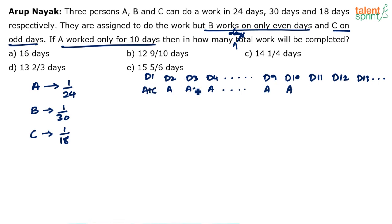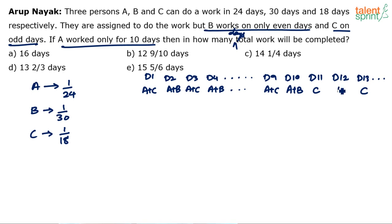So C works on the 1st, 3rd, 5th, 7th, 9th day — A and C work together on odd days. On even days — 2nd, 4th, 6th, 8th, 10th — A and B work together. From the 11th day onwards, only C works on odd days and only B works on even days.